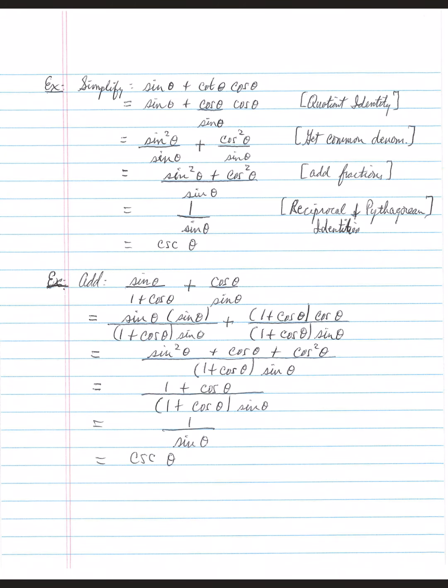Sin²θ + cos²θ over the common denominator of sin θ. From Pythagorean identities, sin²θ + cos²θ is equal to one. One over sin θ, one over sin θ from the reciprocal identity, is csc θ.